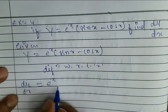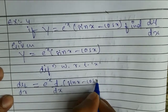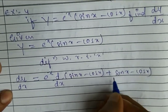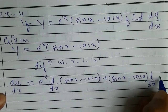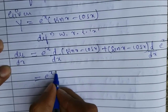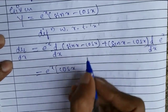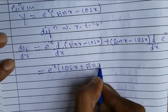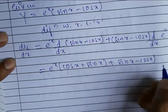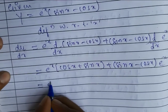So I will write u as it is, differentiation of v, that is d by dx of bracket sin x minus cos x, plus I will write v as it is, sin x minus cos x, differentiation of u, that is e to the power of x. So here, e to the power of x — we know the differentiation of sin x is cos x, and we know the differentiation of cos x is minus sin x — plus sin x minus cos x into e to the power of x, since the differentiation of e to the power of x is e to the power of x only.